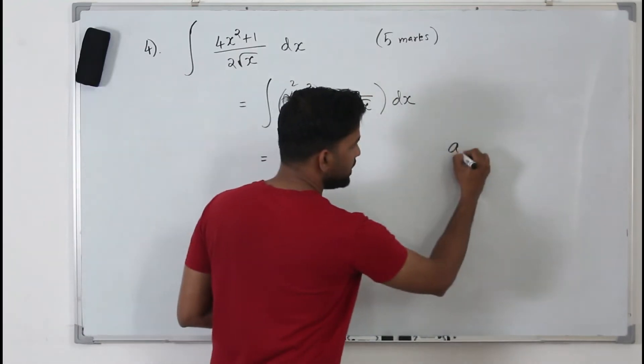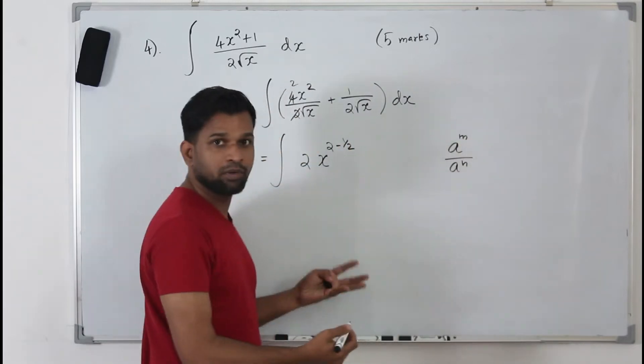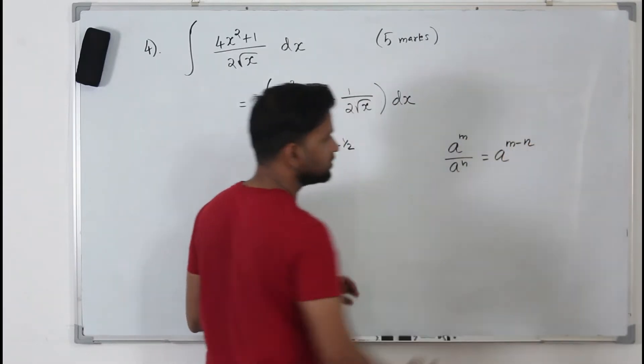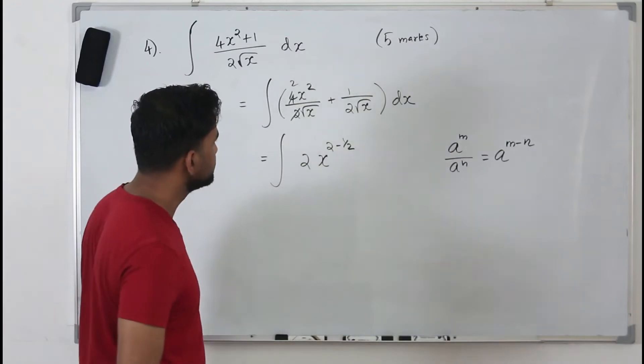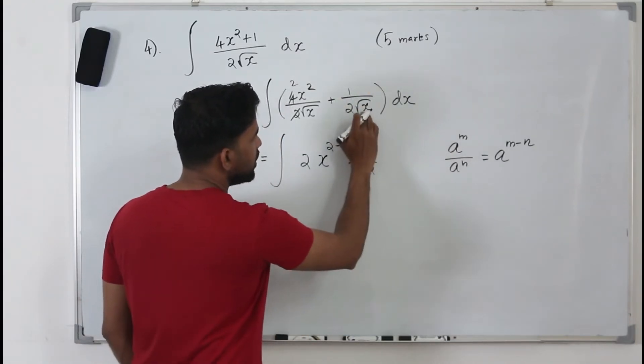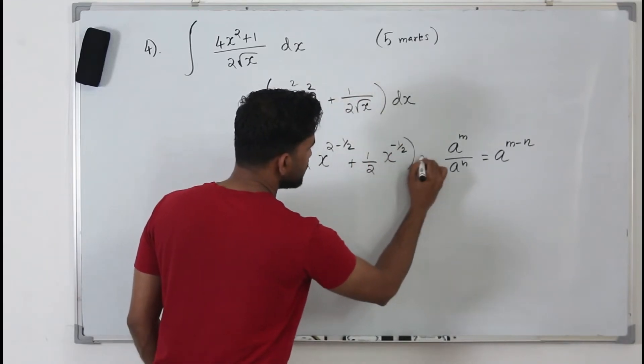So when you apply the laws of indices, if you have 8 to the power m divided by 8 to the power m, you can write it to the power m minus half. That's your laws of indices. And plus 1 by 2, keep 1 by 2 as it is, only bring this term up, it will become x to the power minus half.